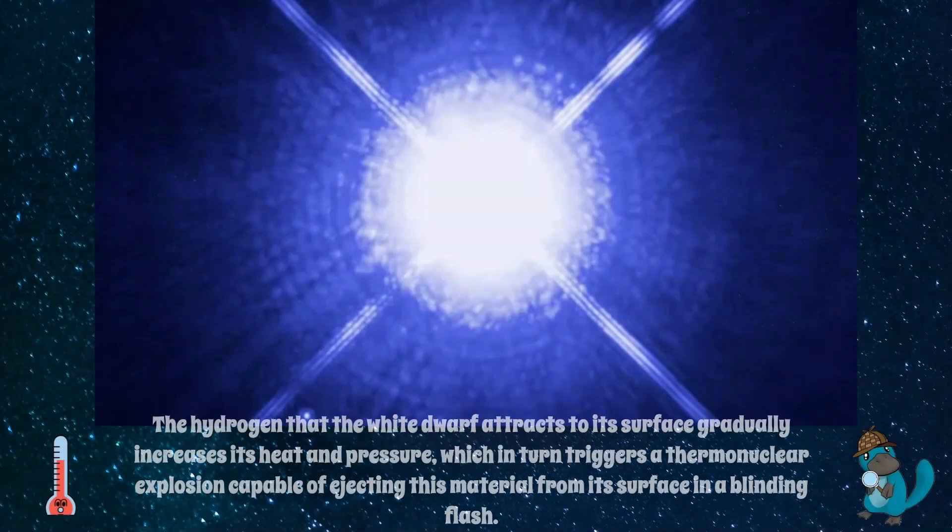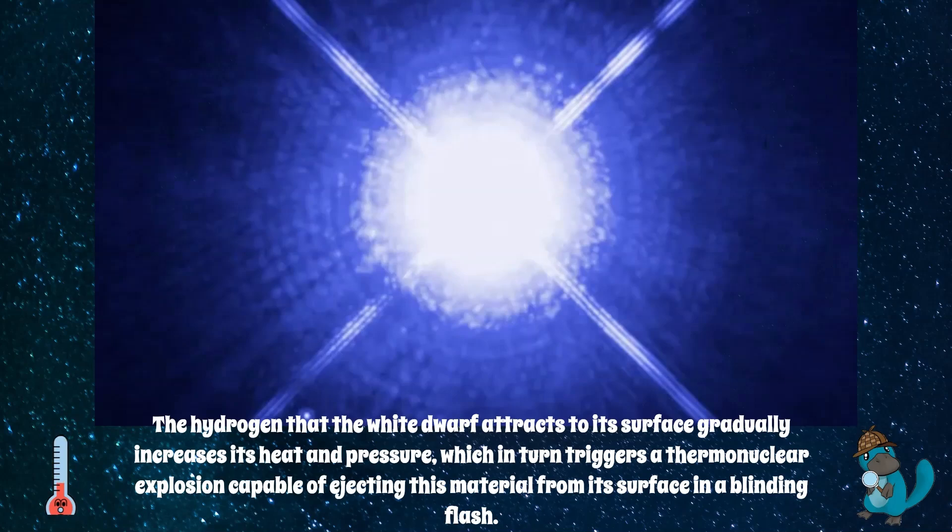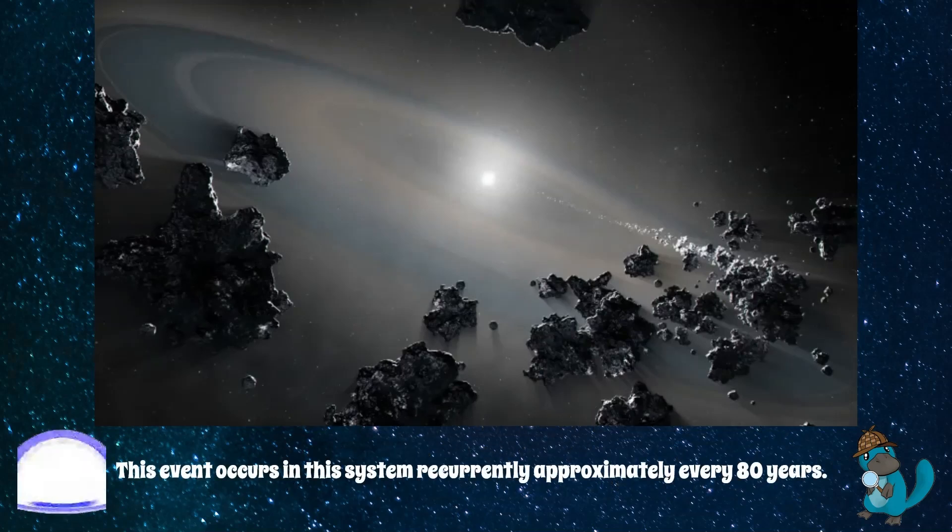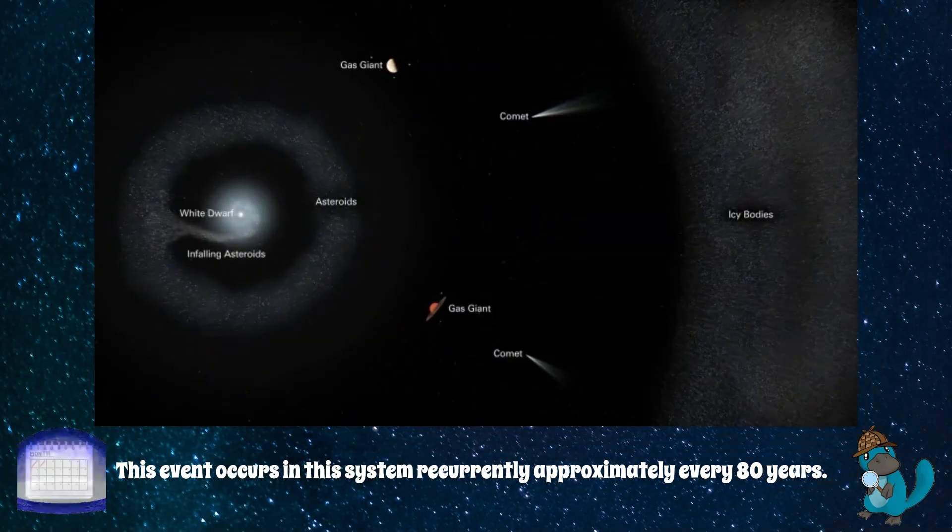The hydrogen that the white dwarf attracts to its surface gradually increases its heat and pressure, which in turn triggers a thermonuclear explosion capable of ejecting this material from its surface in a blinding flash. This event occurs in this system recurrently approximately every 80 years.